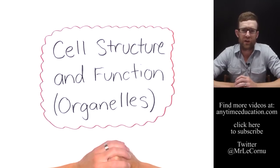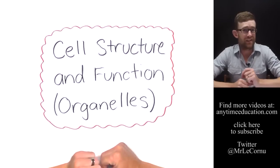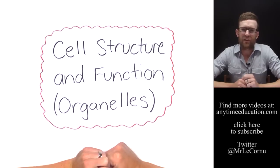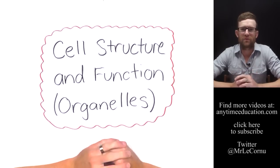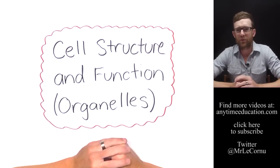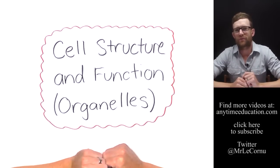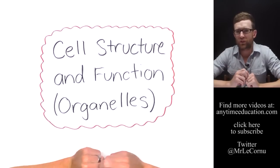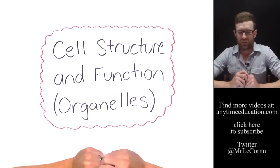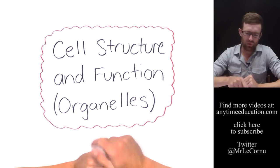We know what cells are — they're microscopic, the smallest independent unit of life. But as technology has improved and microscopes have become more powerful, we've been able to look inside of cells and see the smaller structures within them that carry out particular functions. Those are called organelles.